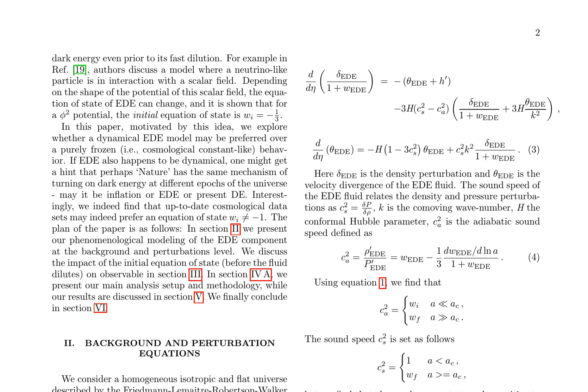The authors investigate a dynamical early dark energy (EED) model, where the equation of state of EED changes over time. Inspired by previous work on a neutrino-like particle interacting with a scalar field, they explore whether a dynamical EED model is preferred over a purely frozen behavior, and if it can provide insights into the mechanism of dark energy at different epochs of the universe.